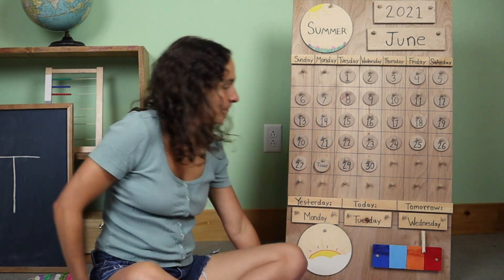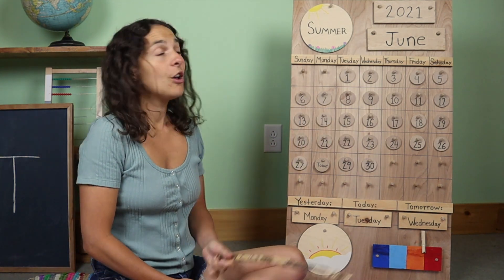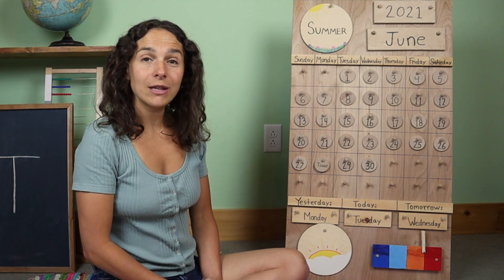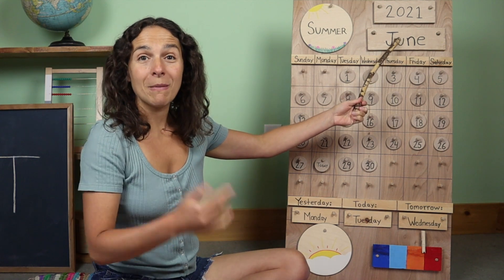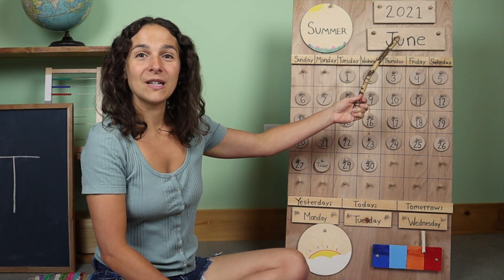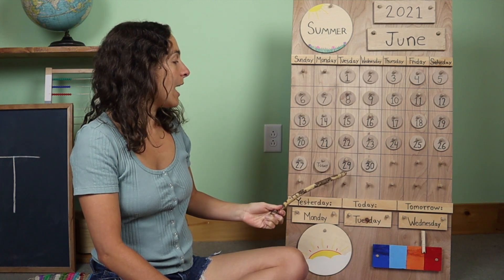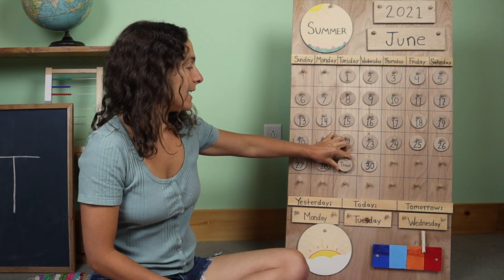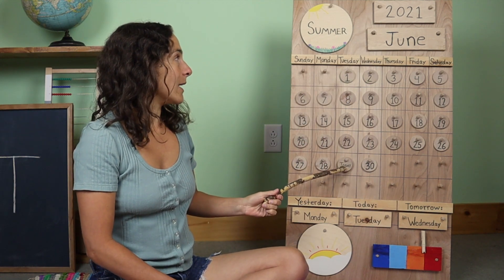Now we can get started with circle time. Behind me, I have the calendar and weather chart. First, we are going to go over the date and start off with the month, which is right up here. Do you remember what the month is? June. Today is June 29th. Yesterday was June 28th. Today is June 29th.